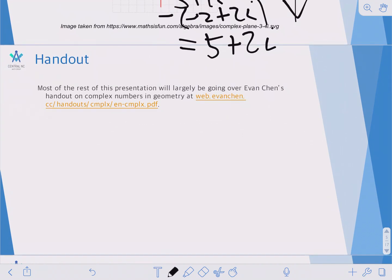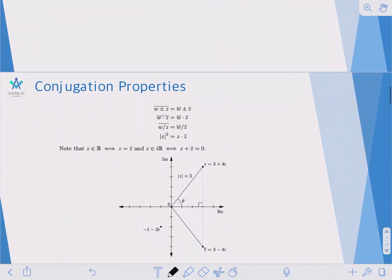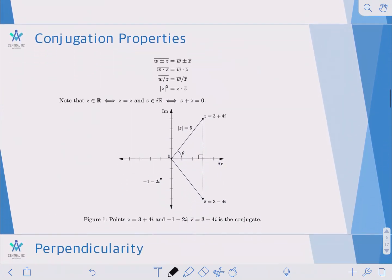Now that you have some of the basics in, the rest of this presentation is going to be taken from Evan Chen's handout on complex number and geometry, which you can find at this link. And we'll finish up with some conjugation properties.